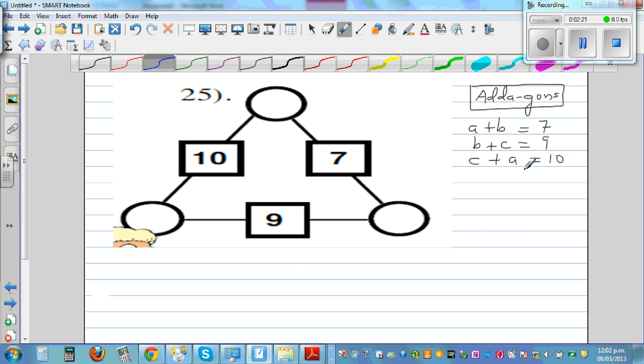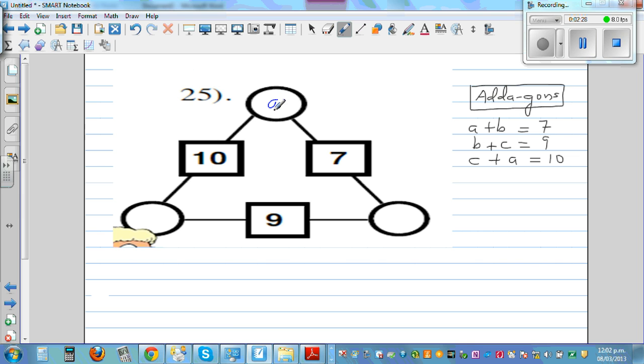A plus B is 7, B plus C is 9. Let me say this is A, this is B, and this is C. So we have made 3 equations: A plus B is 7, B plus C is 9, C plus A is 10. So let's add them.